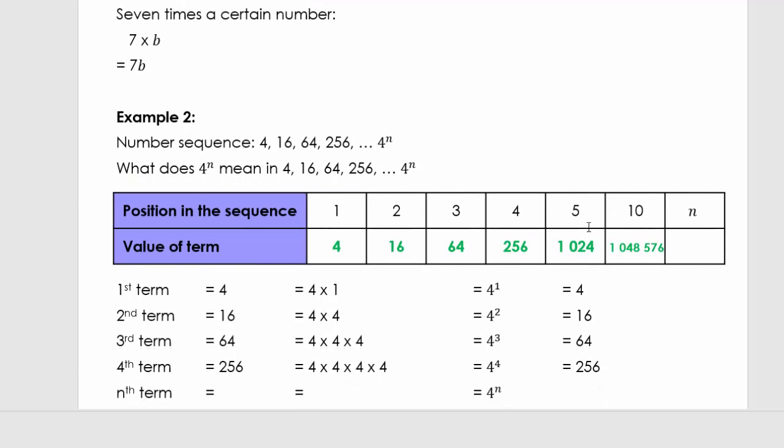Then the 5th and the 10th one you can just work out for fun, but we can see here a clear pattern: 4 to the power of 1, 4 squared, 4 to the power of 3, 4 to the power of 4. So what will my nth pattern be? My nth pattern will be 4 to the power of n.